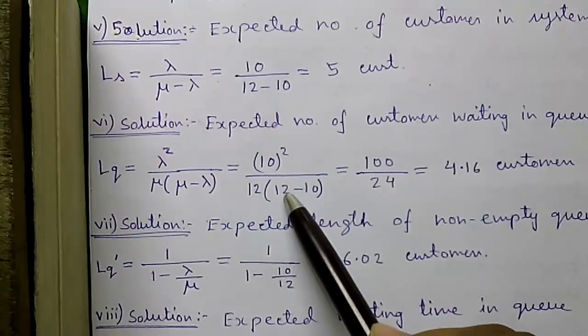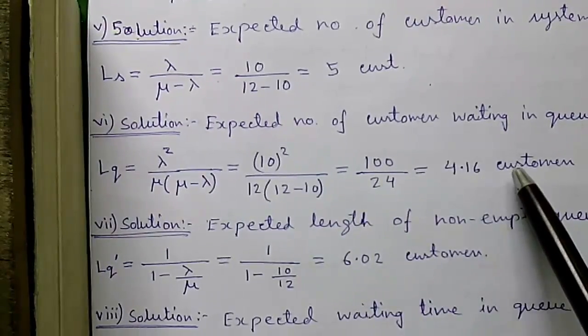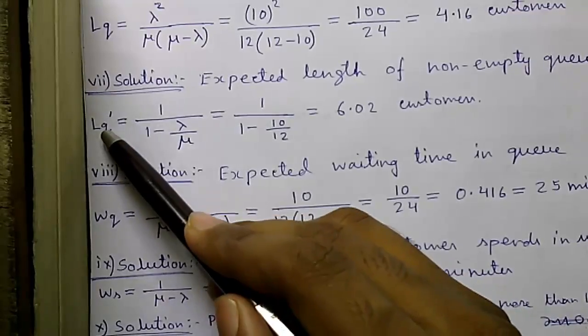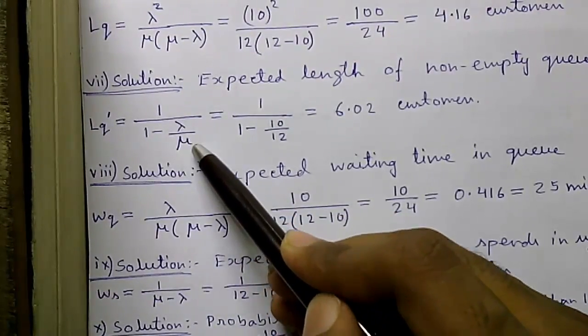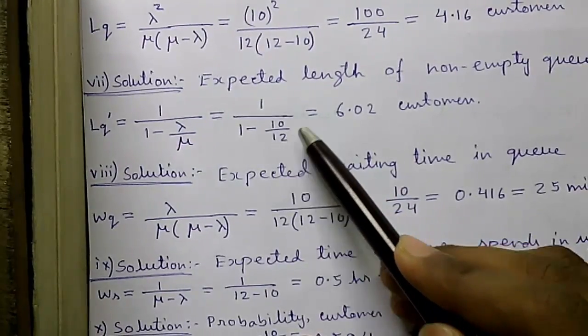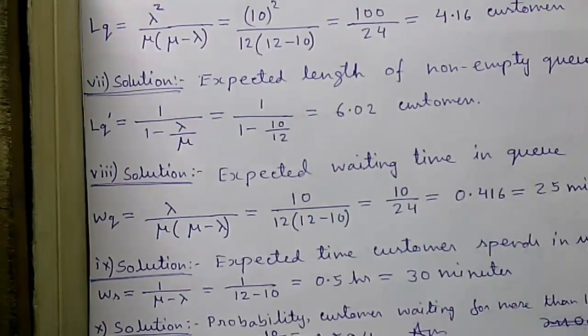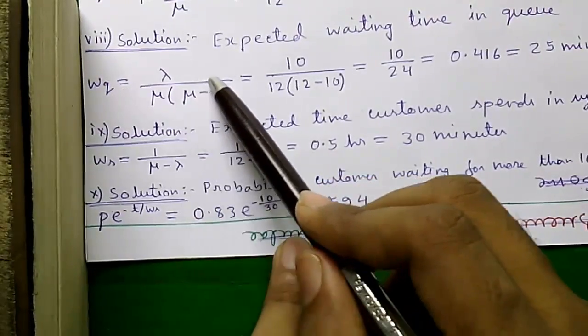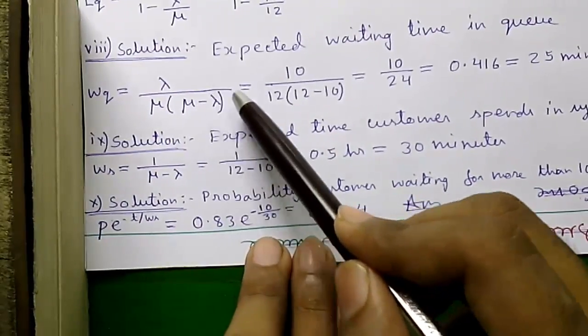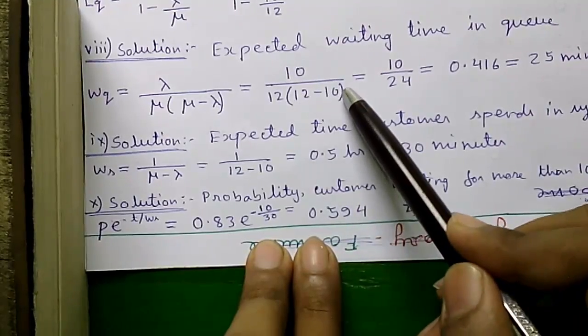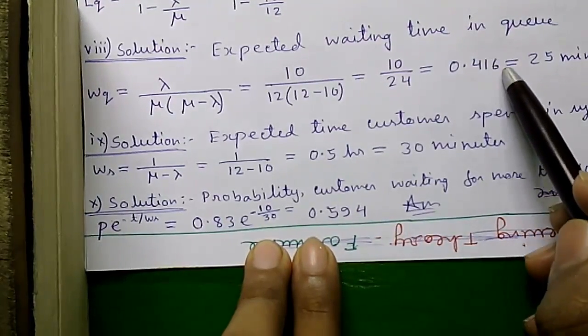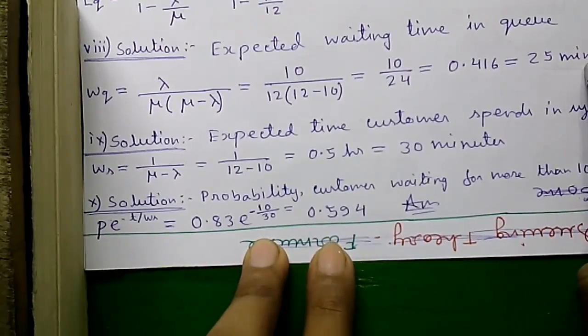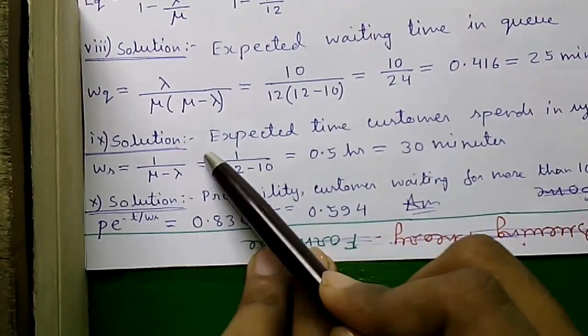Solution of seven: expected length of a non-empty queue is given by Lq dash equals 1 divided by (1 minus lambda by mu) equals 1 divided by (1 minus 10 by 12) which equals 6.02 customers. Solution of eight: expected waiting time in queue is given by Wq equals lambda divided by mu times (mu minus lambda), that is 10 divided by 12 times (12 minus 10) which equals 0.416 hours or 25 minutes expected time for each customer in queue.